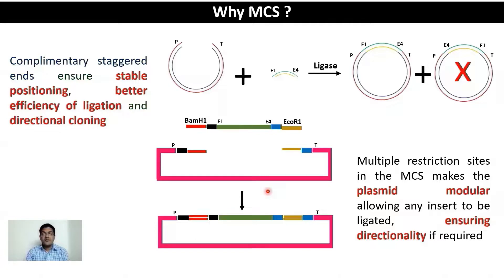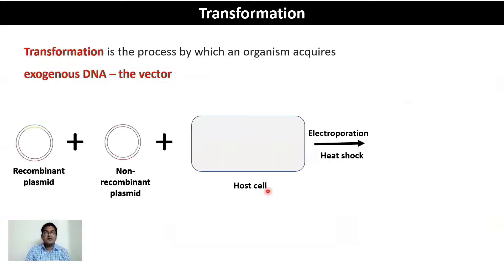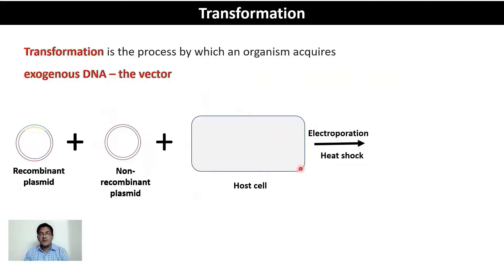The next step is the transformation reaction. Efficiency of transformation is critically important for the successful completion of experimental objectives. Transformation is the process by which an organism acquires exogenous DNA — in our case, the acquisition of a vector, specifically a recombinant vector. In the reaction mix, both recombinant and non-recombinant vectors will be present, and both have an equal chance of being inserted into the host cell.